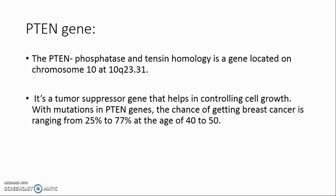PTEN gene: the PTEN (Phosphatase and Tensin Homolog) gene is located on chromosome 10 at 10q23.31. It is a tumor suppressor gene that helps in controlling cell growth. With mutations in the PTEN gene, the chance of getting breast cancer ranges from 25% to 77% by the age of 40 to 50.